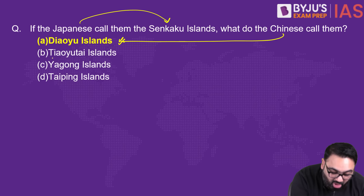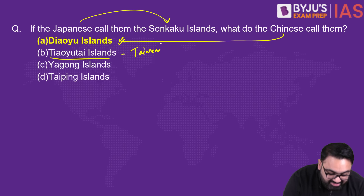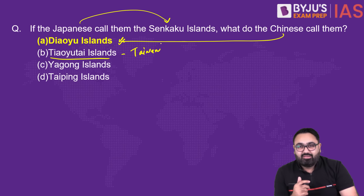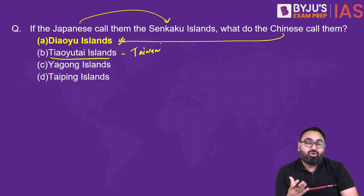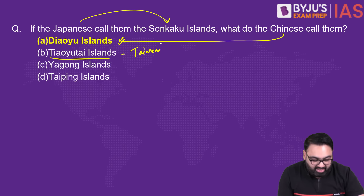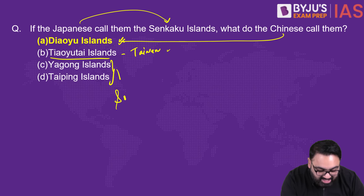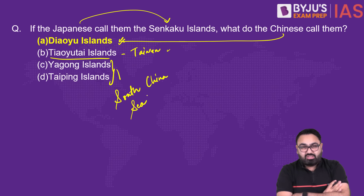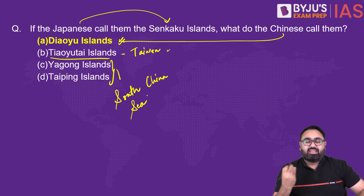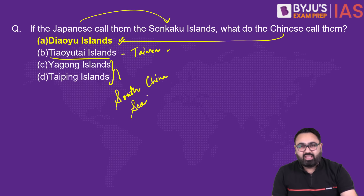Interestingly, Taiwan also calls these islands by the same name as China — they are the same set of islands. Not just China and Japan, but Taiwan also claims this as their territory. From Taiwan's point of view, the entire Chinese mainland belongs to them — they consider themselves the true rulers. That is why any territory disputed by China is also claimed by Taiwan. The other options — Yangon and Taiping — are islands in the South China Sea. The answer is A.